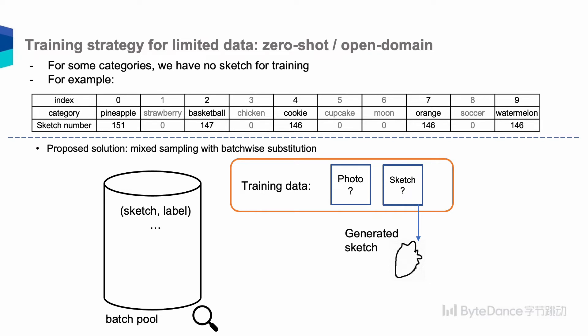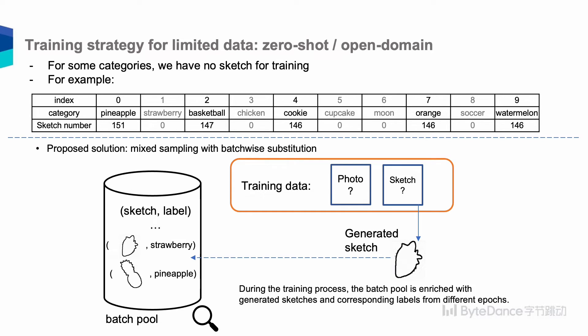So we propose a random mixed training strategy. We construct a batch pool of pseudo sketches and labels by randomly mixing synthesized sketches with real ones in a batch-wise manner. During training, this batch pool is enriched with real sketches and generated sketches from different epochs, and the pseudo sketches are treated as real ones by the generator. During optimization, this sampling strategy is only applied to GP, while classifiers and discriminators are still updated with real and fake data to guarantee their discriminative power.